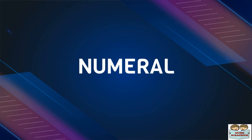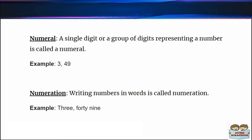What is a numeral? A single digit or a group of digits representing a number is called a numeral. For example, the digits 3 and 49 are called numerals. Writing numbers in words is called numeration. For example, 3 and 49 written in words — this is called numeration.